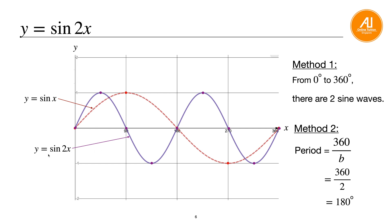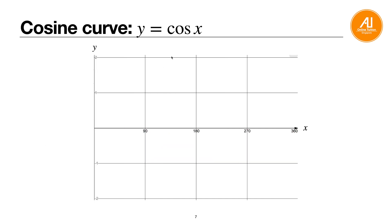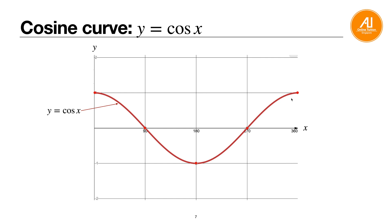The cosine curve looks like a big valley. It starts from 1, goes to 0 at 90, down to minus 1 at 180, back to 0 at 270, and returns to 1 at 360. Always divide into four equal intervals. The same principles apply whether working in degrees or radians.